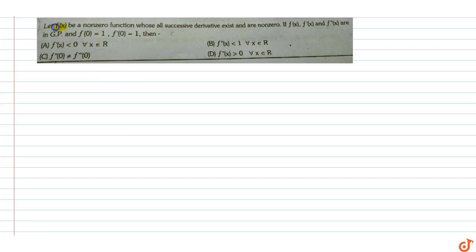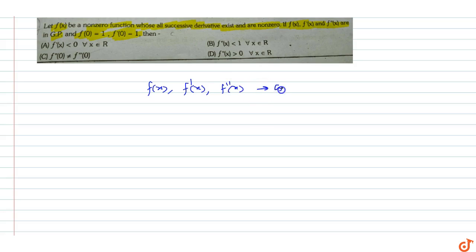In this question, if f(x) is a non-zero function with all successive derivatives existing and non-zero, and if f(x), f'(x), and f''(x) are in GP, with f(0)=1 and f'(0)=1, then since f(x), f'(x), f''(x) are in GP, we can say that f'(x) whole square is equal to f(x) into f''(x).